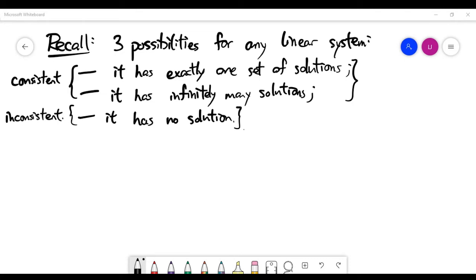There are actually three possibilities for any linear system. The first two possibilities we call consistent because they have at least one set of solutions. The last possibility we call inconsistent, meaning it has no solution at all.